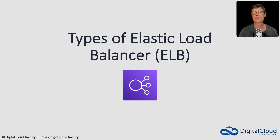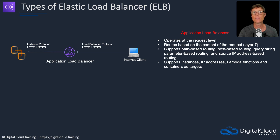In this lesson, I'm going to cover the different types of elastic load balancer available on AWS, and you need to understand for the exam which one to use for specific use cases. The first type is the application load balancer, the ALB. The ALB will listen at the request level, so it's listening at layer seven, meaning the listener uses the HTTP or HTTPS protocol, and the ALB can route connections based on information at that level.